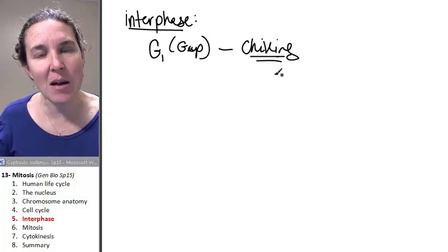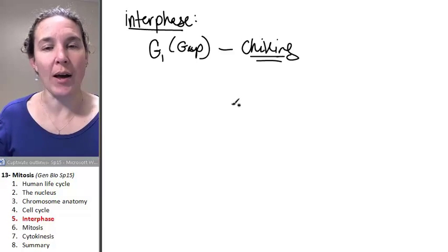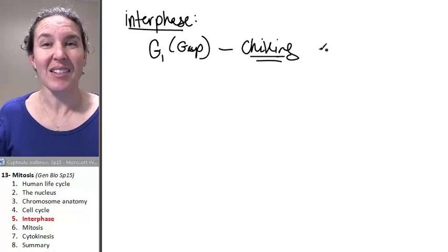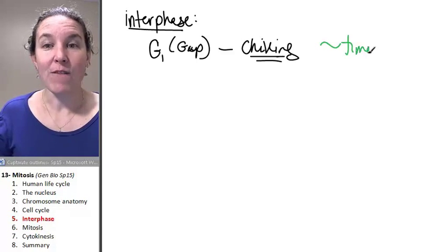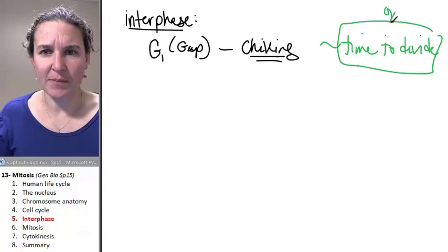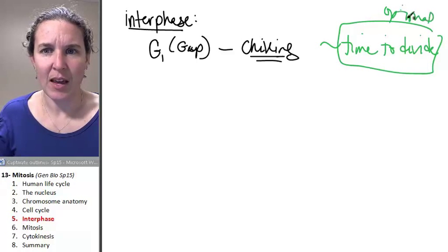At some point in G1, the cell may or may not get a message. It's time to divide. If you think about it, this is optional. Now, this is a cool phenomenon.